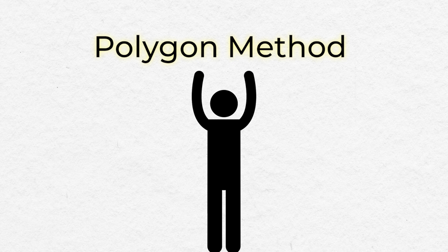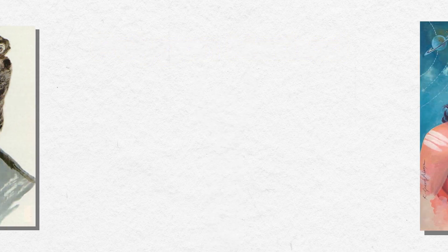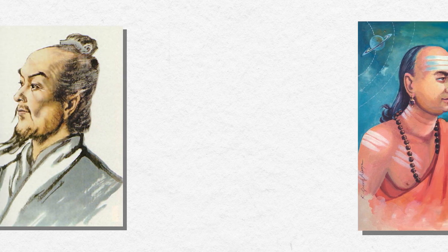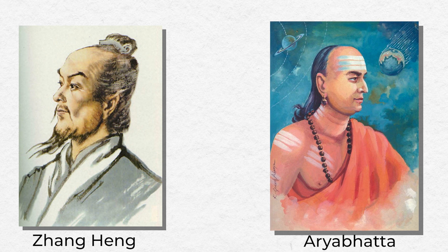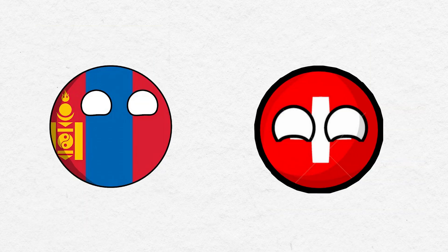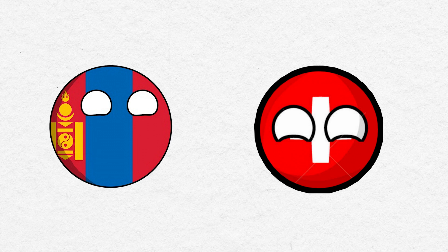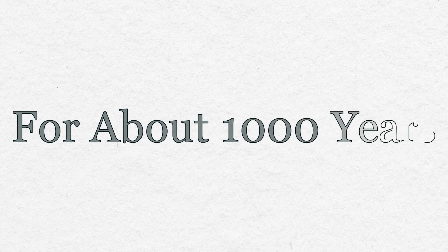This polygon method by Archimedes was a major breakthrough. While there were many similar methods invented separately by Zhang Heng from ancient China and Aryabhata in ancient India, who used area instead of perimeter, or some optimization techniques with Mongolian and Swiss mathematicians, this method was so good it remained the most predominantly used method for pi approximation for approximately the next thousand years.